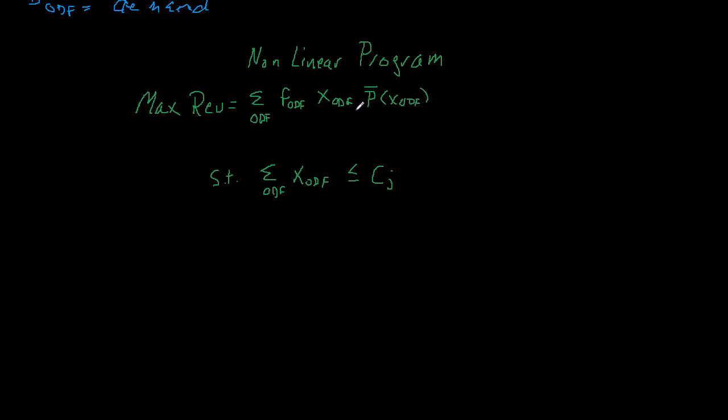So now my objective function to calculate revenue, I'm not simply summing the fare times the number of seats. I'm multiplying the fare, multiplied by the number of seats I've allocated to each fare, multiplied by the probability that each one of those seats will actually be filled. So this is now the probability that I actually have demand for each one of the seats that I've allocated. And that's going to be a more accurate representation of total demand.